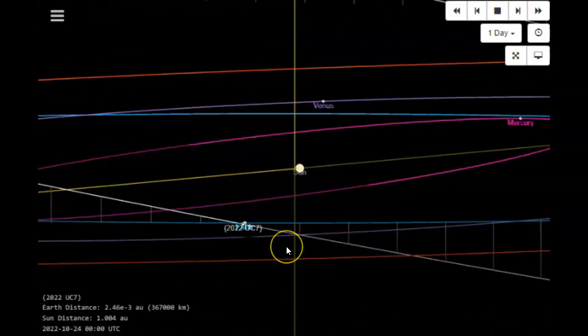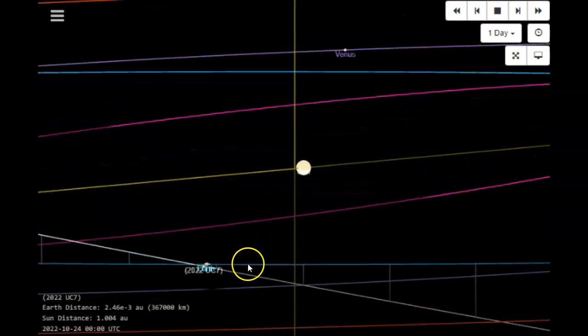There it is there for you guys to really take a look at. And, we'll move it out. So, you can see the two coming together. 2022 UCF and Earth. There's a considerable angle. But, it does not look like they do impact. It does look like they do cross each other's orbital paths.